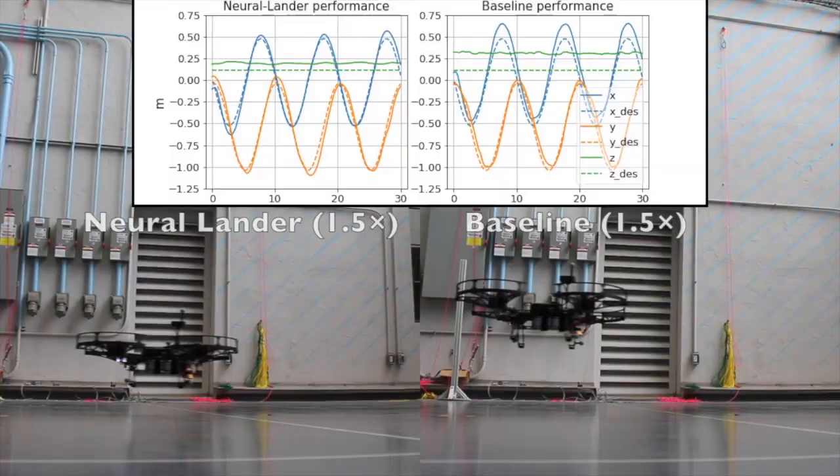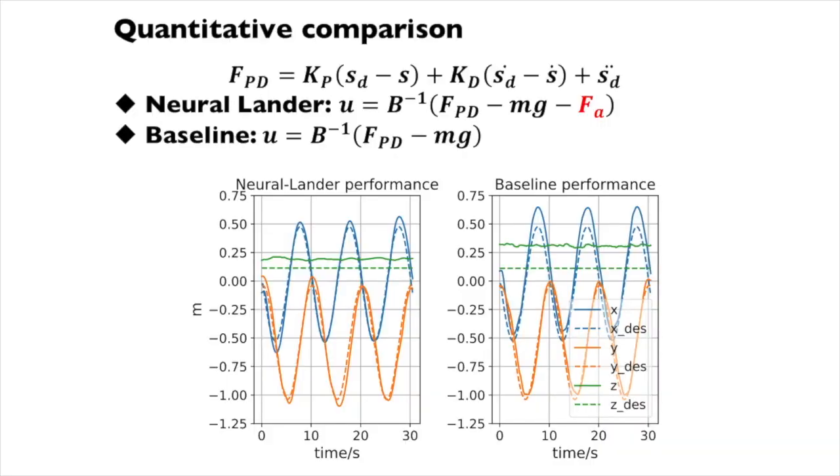The baseline controller is the Neural Lander with F_a equal to zero. Note that the baseline is fairly good because it considers the feedforward term the desired acceleration.